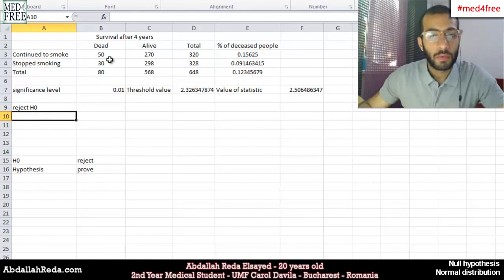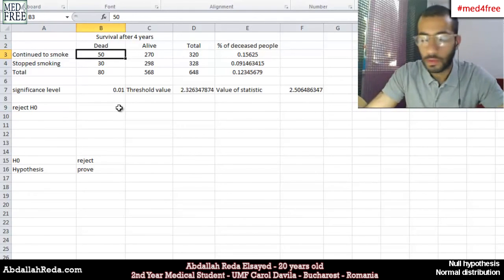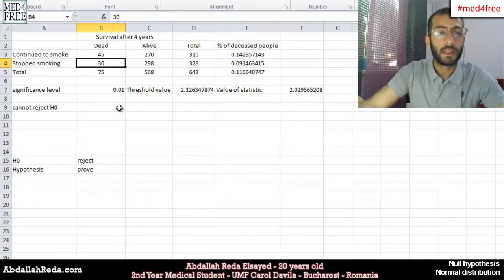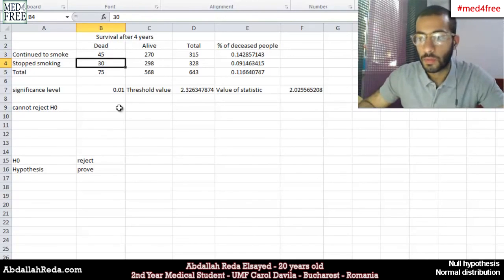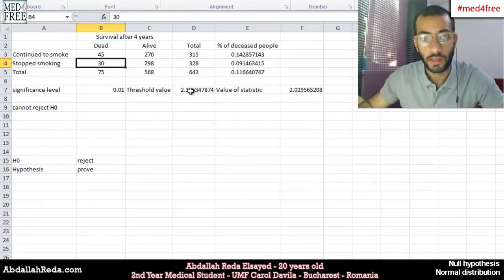If we change the numbers, just in order to let you see, if we have less people, let's say 45 people who continued smoking actually died, we can see that we cannot reject the null hypothesis because this value is less. Now, this is 2.03 and this is 2.3.